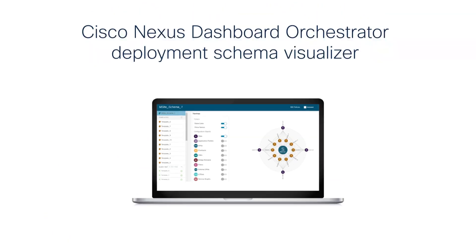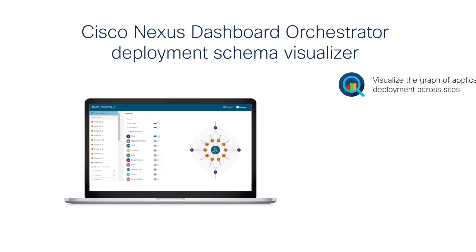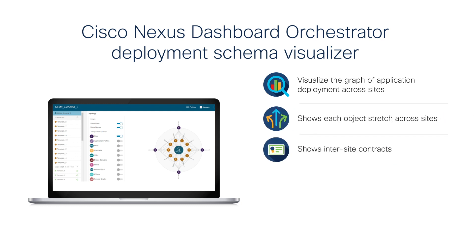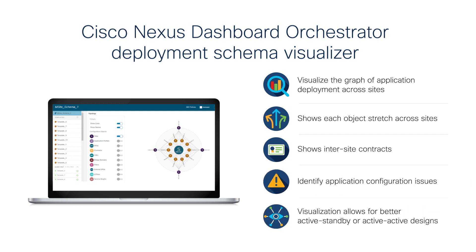The Cisco Nexus Dashboard Orchestrator deployment schema visualizer is another new feature for version 3.1. It lets you visualize application deployment across sites for improved insights. It shows each object stretched across sites and inter-site contracts, so you can identify application configuration issues and achieve better active standby or active-active designs.